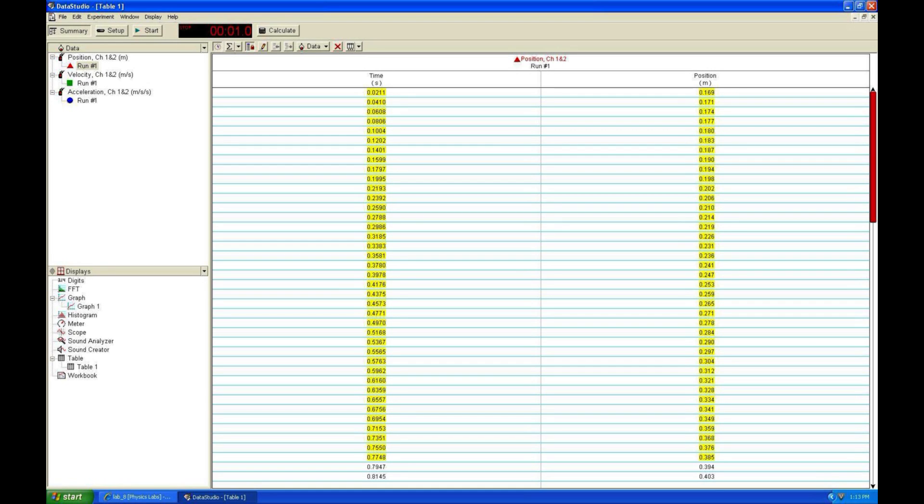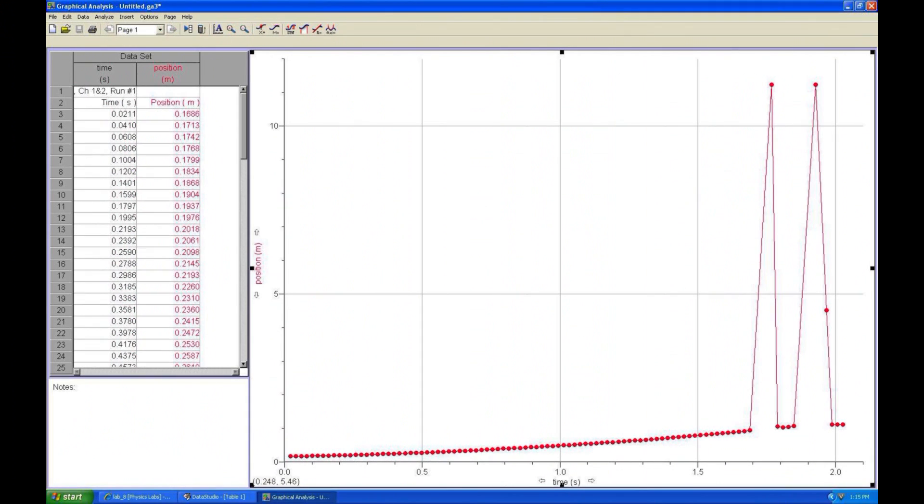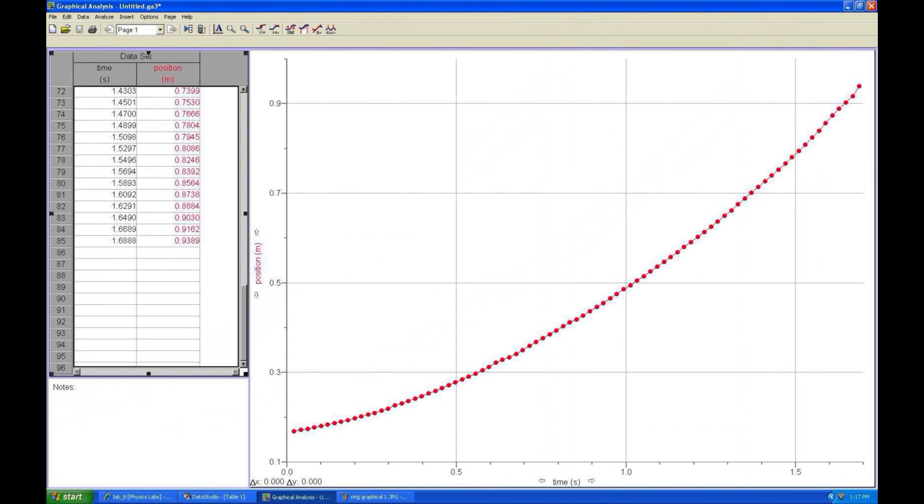If you open a data table and select the data of time and position, you may copy and paste it into graphical analysis. You can then trim off any data that you have reason to believe is suspect.